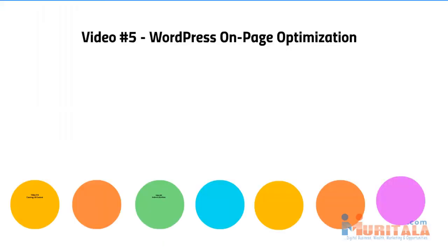So with that said, let's move on to video number five. I'm going to talk about WordPress on-page optimization, and we're going to jump on to a real live WordPress site. I'm going to assume that you know how to install WordPress and you have a WordPress site. So assuming that's the base condition, I'm going to start from scratch where we have just installed a brand new WordPress install, and I'll walk you through step-by-step everything that we talked about in this particular video.